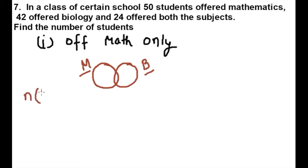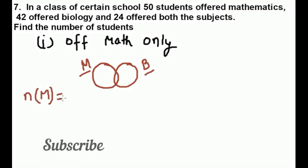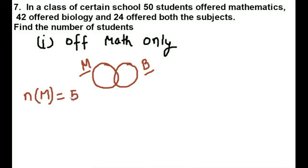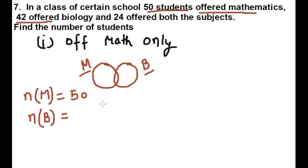Number of students in set M, meaning number of students in mathematics, is 50. Number of students in set B, meaning number of students who offered biology, is 42.